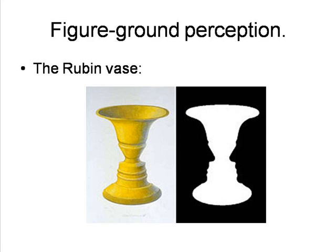Note that we seem to be able to decide which of the two images to see by an act of will — a crucial emphasis of the importance of volition in the Gestaltist system, and quite different from the Wundtian and behaviorist perspectives.